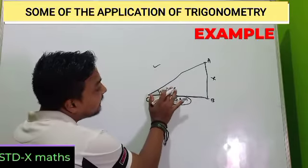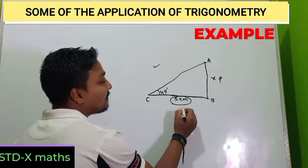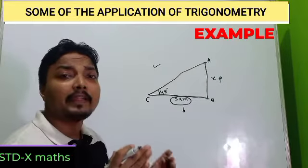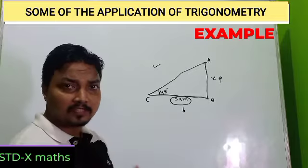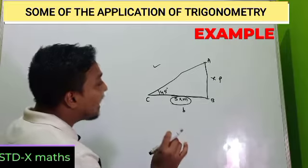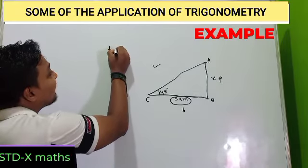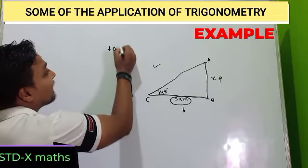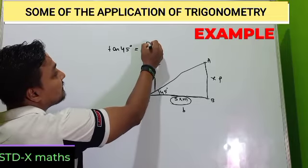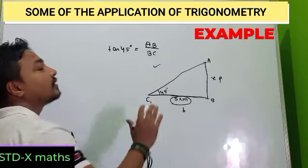See carefully: for this angle, this one is P and this one is B. So the P-B related trigonometric ratio is tan and cot. Either you may use tan or cot. I am feeling comfortable to use tan. So I just have to write: tan 45° = P/B = FB divided by BC.